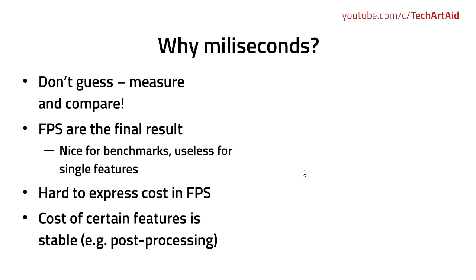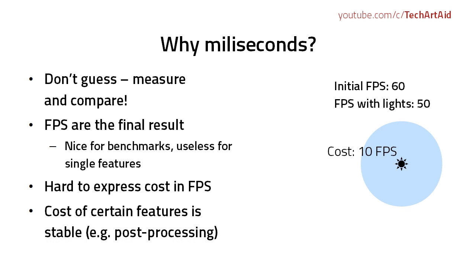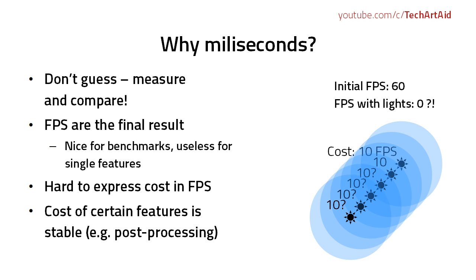Let's look at it this way. We have a light that, when we put it on the scene, we drop from 60 to 50 FPS — for example, a very heavy shadowed light. So if you assume the cost of that light was 10 FPS, then placing 5 more lights of this kind will leave us with 0 FPS? No, it certainly doesn't work that way.